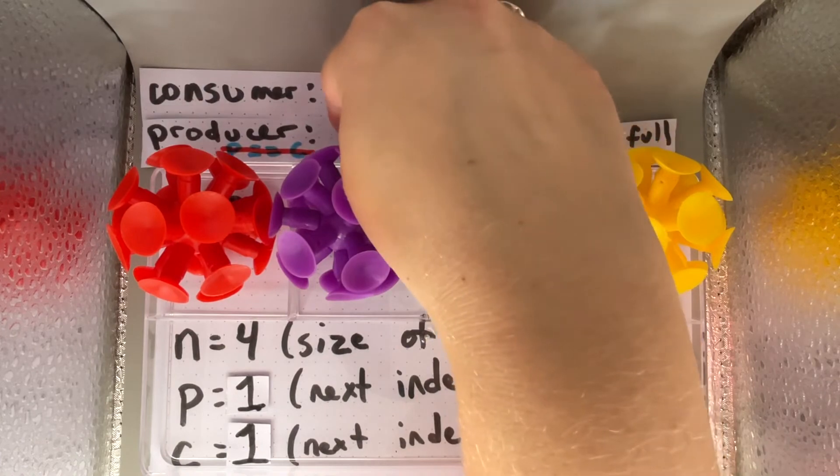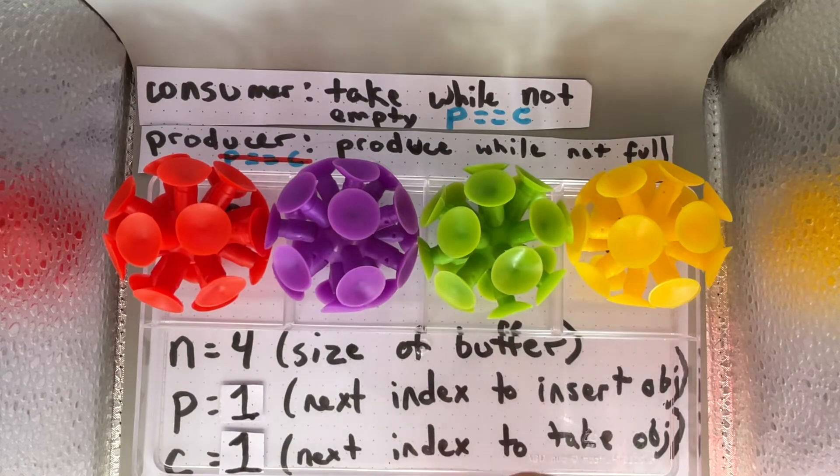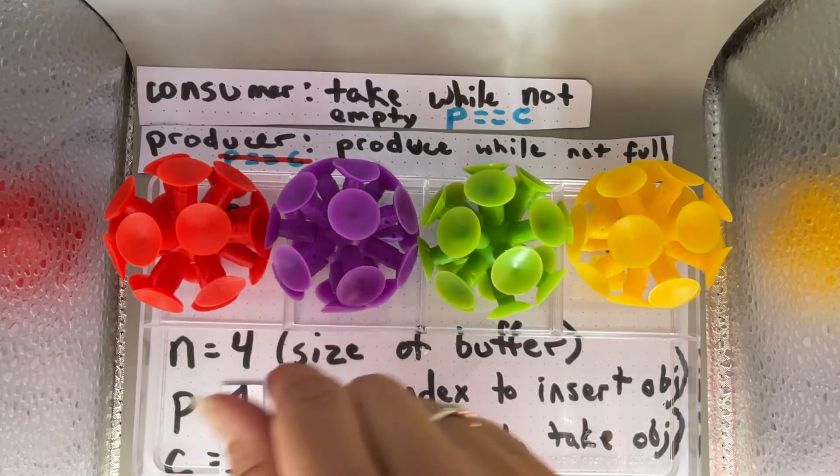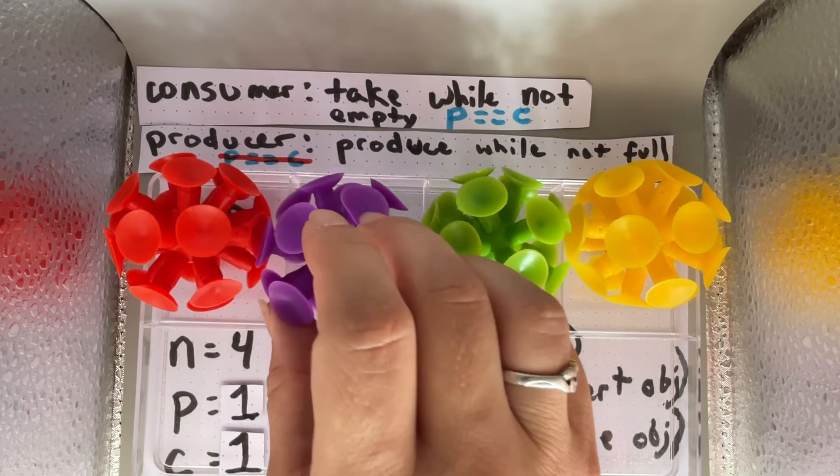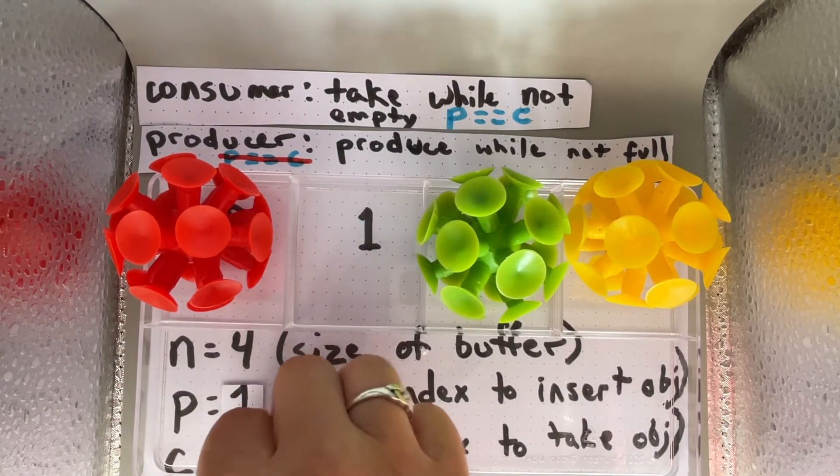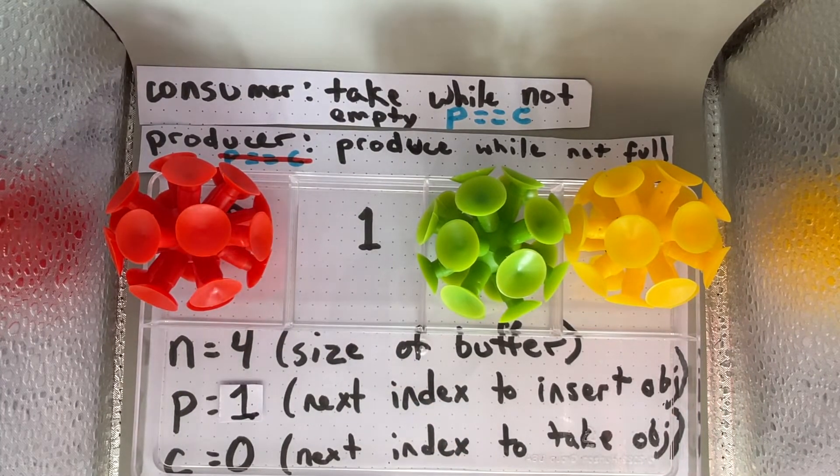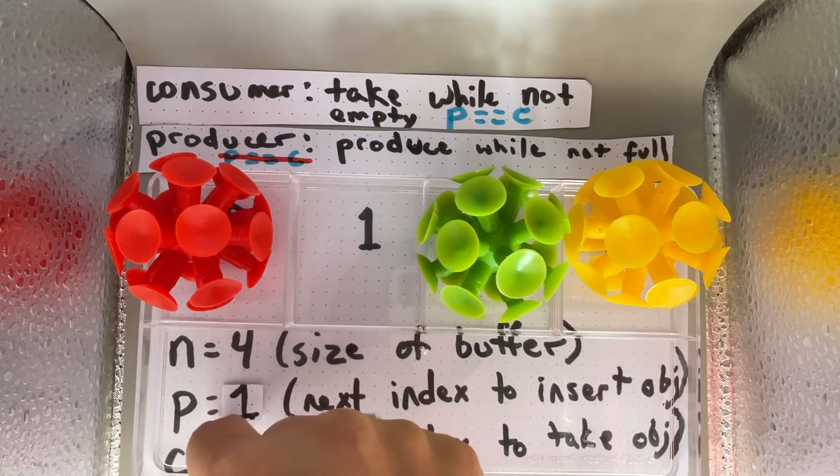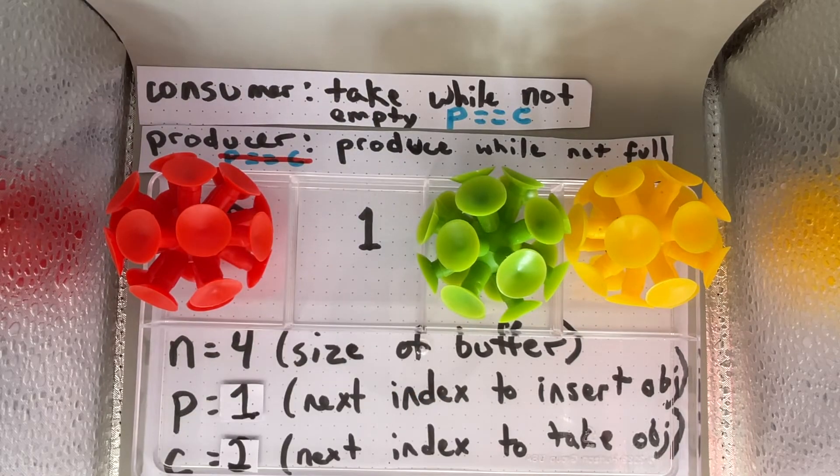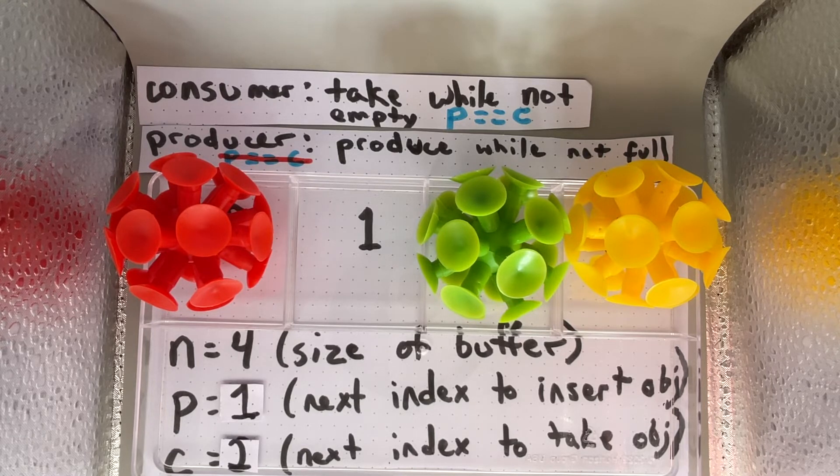Since we know the producer cannot do anything, the consumer is going to remove object 1 and increase c so that it is now object 2 that it would be removing next. If we assume we are still full, we can do some math here to differentiate between full and empty.